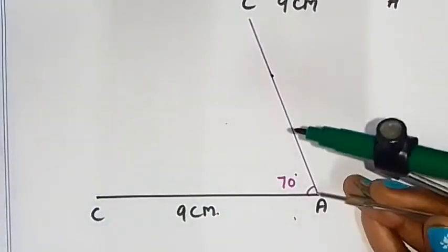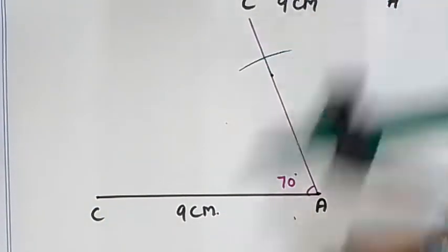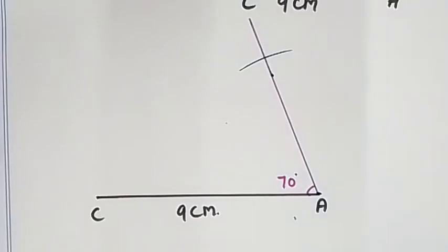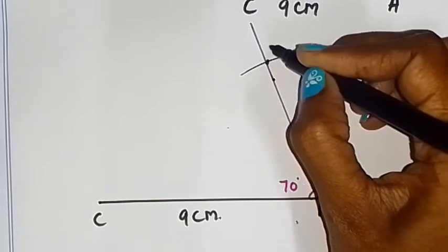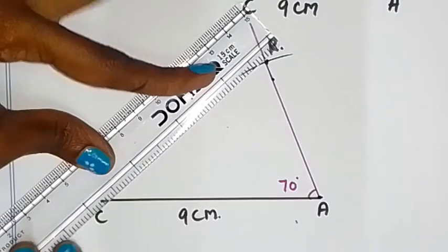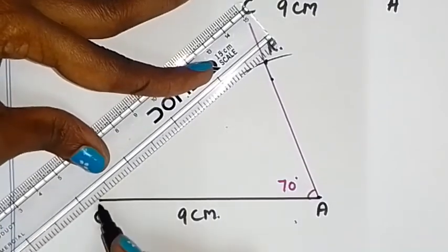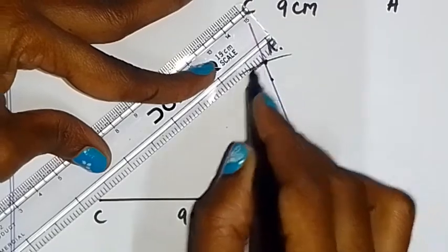Now we will cut. So now point R, the angle R. So now we will cut diagonal, join R, C, and the scale we will cut a diagonal.